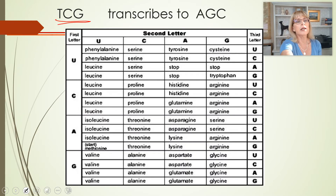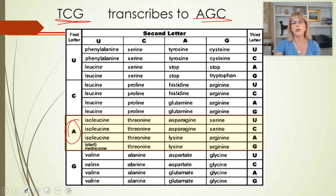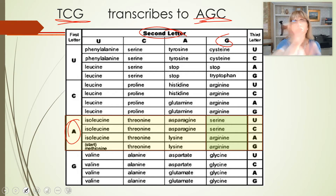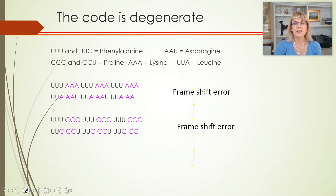So if I gave you the DNA TCG, first you transcribe it — messenger RNA codon chart — giving you AGC. A is the first letter, so everything in this column has A as the first codon letter. Then go to the second letter, G. These four codons all start with AG. The third letter is C, so the correct answer is serine.